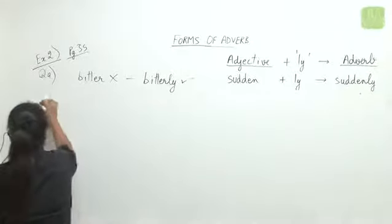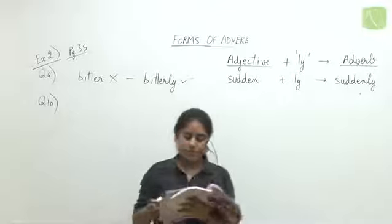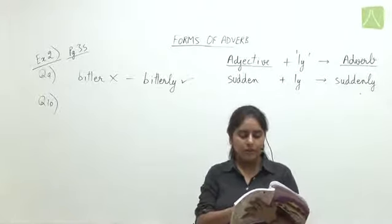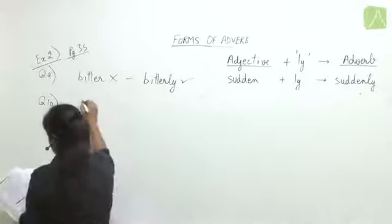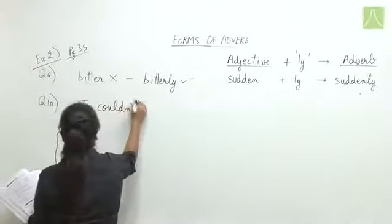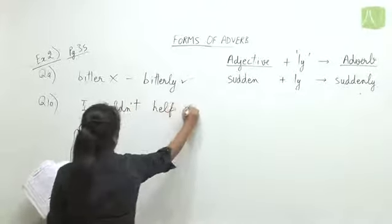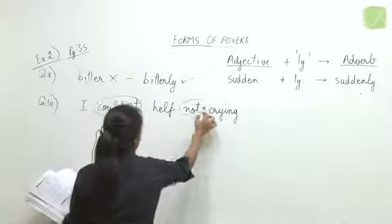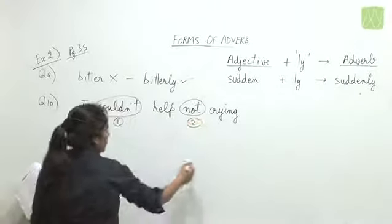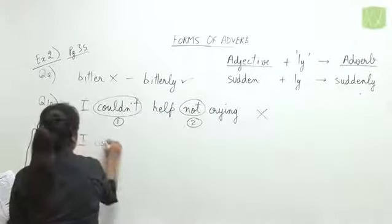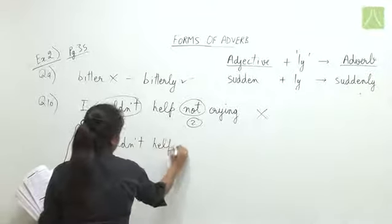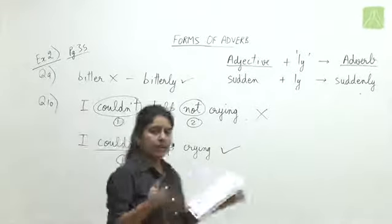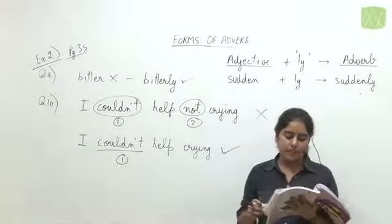Question ten: 'I couldn't help not crying.' Here 'not' should not come because we must avoid double negatives. 'Couldn't' already contains a negative — 'could not.' Using 'not' again creates two negatives. The correct sentence is 'I couldn't help crying.' Question eleven: 'He will pay dear for this mistake.' 'Dear' is wrong; the correct adverb form is 'dearly.' So the sentence should be 'He will pay dearly.'